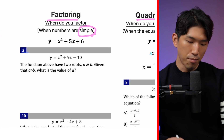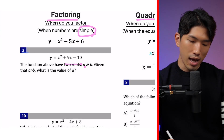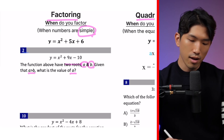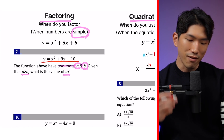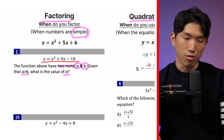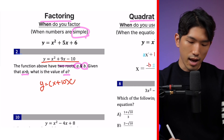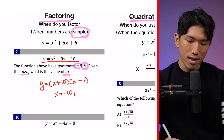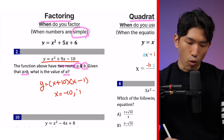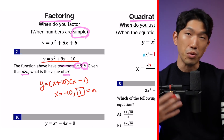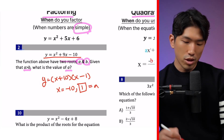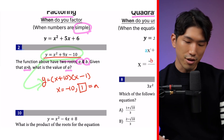Let's look at a factoring example. The function above has two roots, a and b. Given that a is greater than b, what's the value of a? Looking at this equation, we know it is obviously factorable — numbers are looking nice and clean. We factor into (x minus 10) and (x minus 1), which means our roots are at negative 10 and positive 1. Of the two, 1 is greater, so that's going to be the value of a.